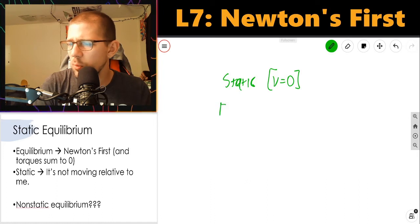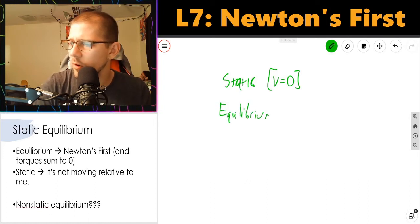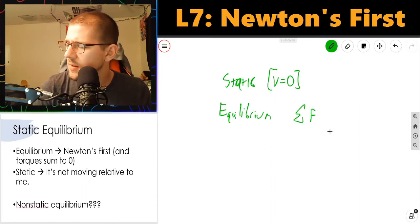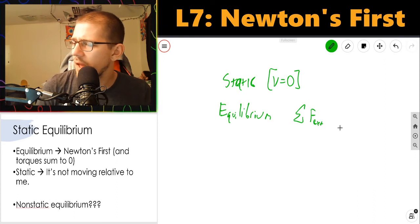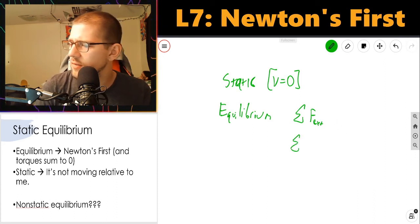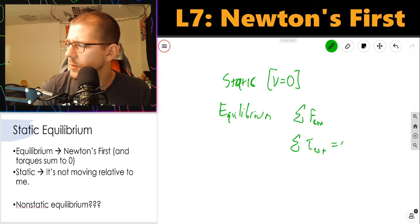When we say equilibrium for a physical system, we mean that the sum of the forces external to the system and the sum of the torques external to the system are zero.